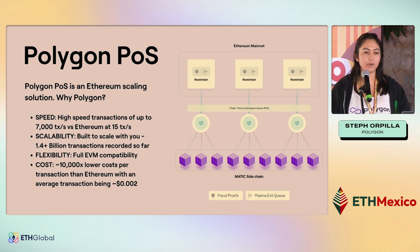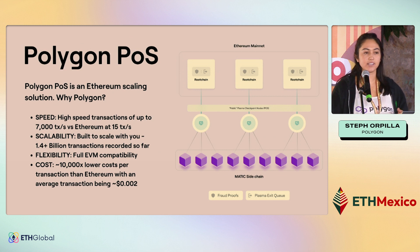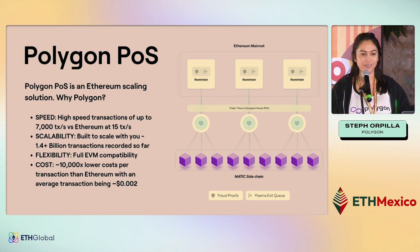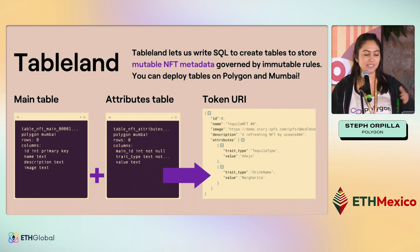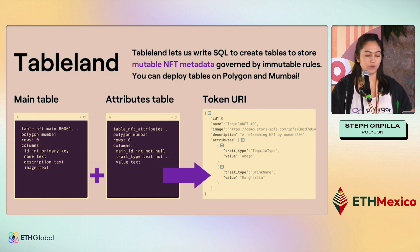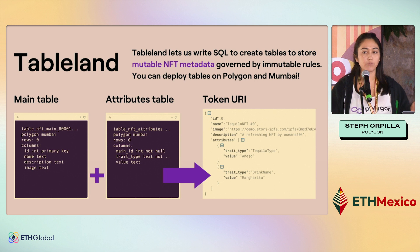So how are we going to build this? We're going to use Polygon POS and Tableland. Just to give you a quick refresher on Polygon — it's an Ethereum scaling solution. Transactions are really fast and low cost. We're also going carbon negative this year, which is nice and sustainable. And Tableland lets us write SQL to create tables to store mutable NFT metadata that is governed by immutable rules. The Tableland data exists on both Polygon and Mumbai, so whichever network you choose to deploy on, you'll be able to do that.